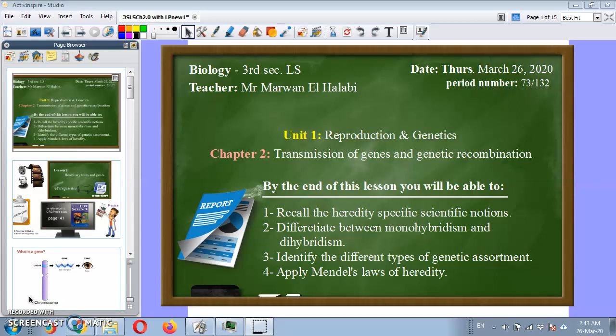We are dealing with unit 1 reproduction and genetics in chapter 2 transmission of genes and genetic recombination. By the end of this lesson you will be able to recall the heredity specific scientific notions, differentiate between monohybridism and dihybridism, identify the different types of genetic assortment, and apply Mendel's laws of heredity.